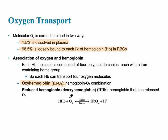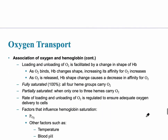Going from left to right represents what happens in the lungs, and going in the opposite direction is what occurs in the tissues, so that oxygen can be released from the red blood cell and then diffuse into the tissues as needed. The key takeaway is that oxygen binds to the hemoglobin.